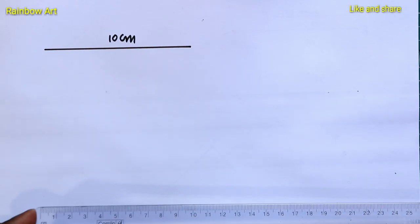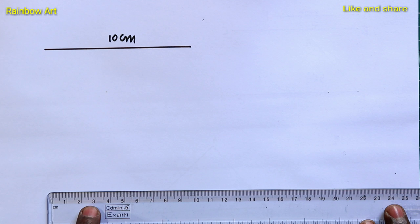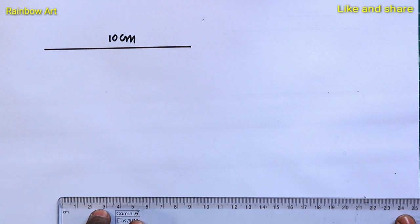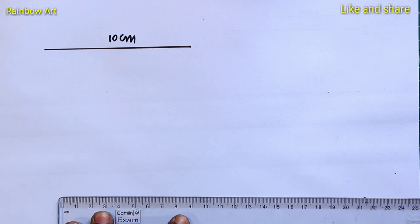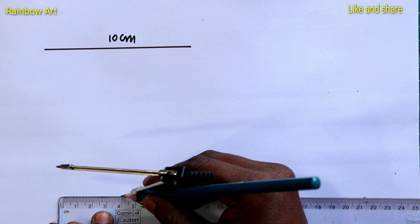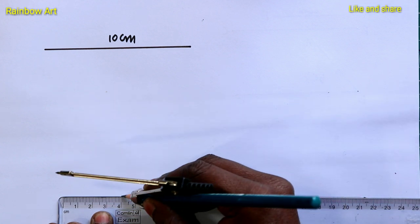First we are going to learn how to draw an equilateral triangle. Suppose you have the given side is 10 cm. First take a scale and draw a straight line.